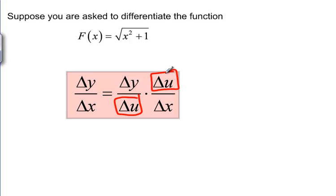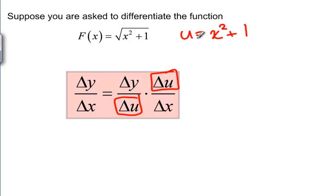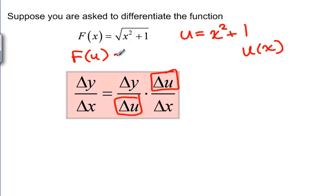In our case, this inside function — this U — would be X squared plus 1. We can say that U is a function of X, and we can think of F as a function of U, so it's just the square root of U.